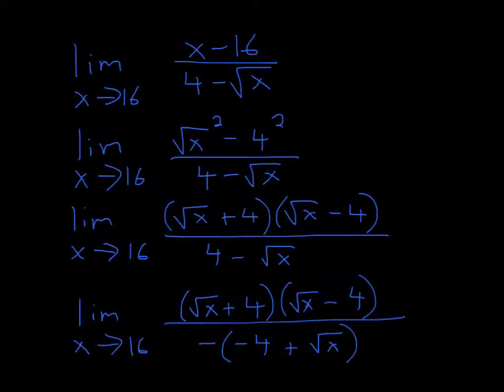So we try something different. We know we want to get rid of this square root. What we can do is look for something that can help us. We see this 16 and this 4, so we know that they're related, because if you square 4, you get 16.